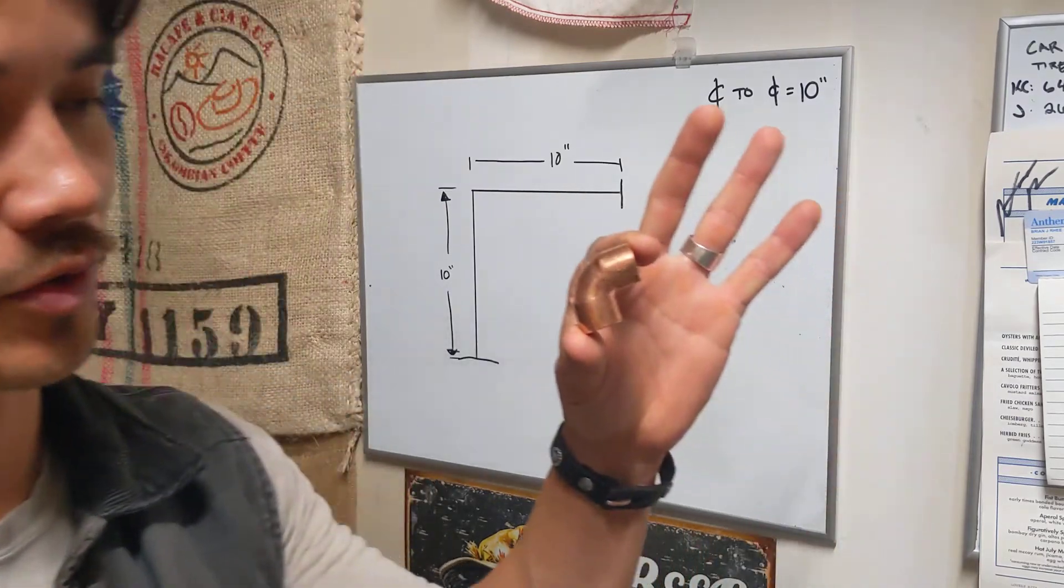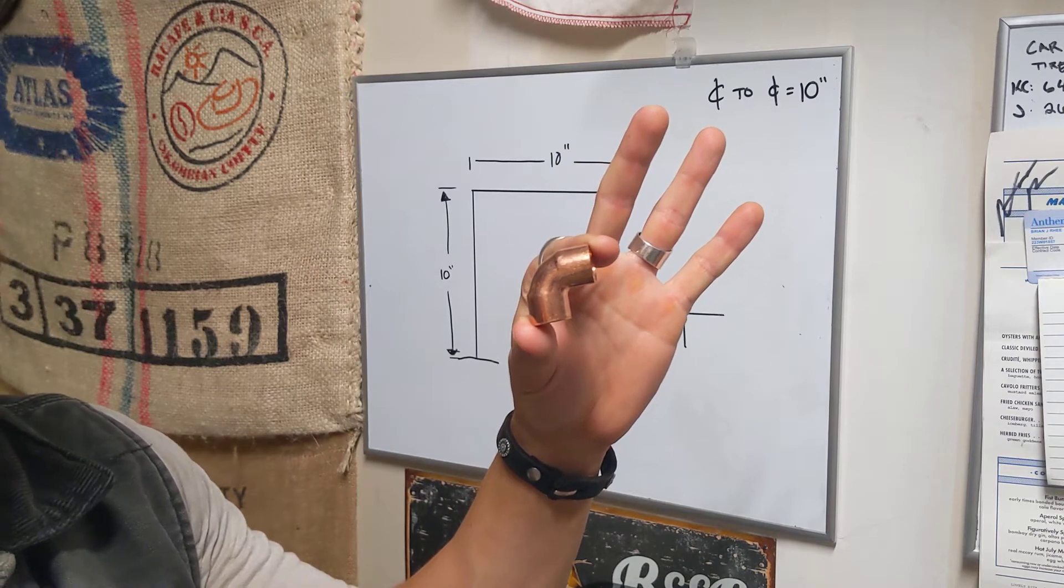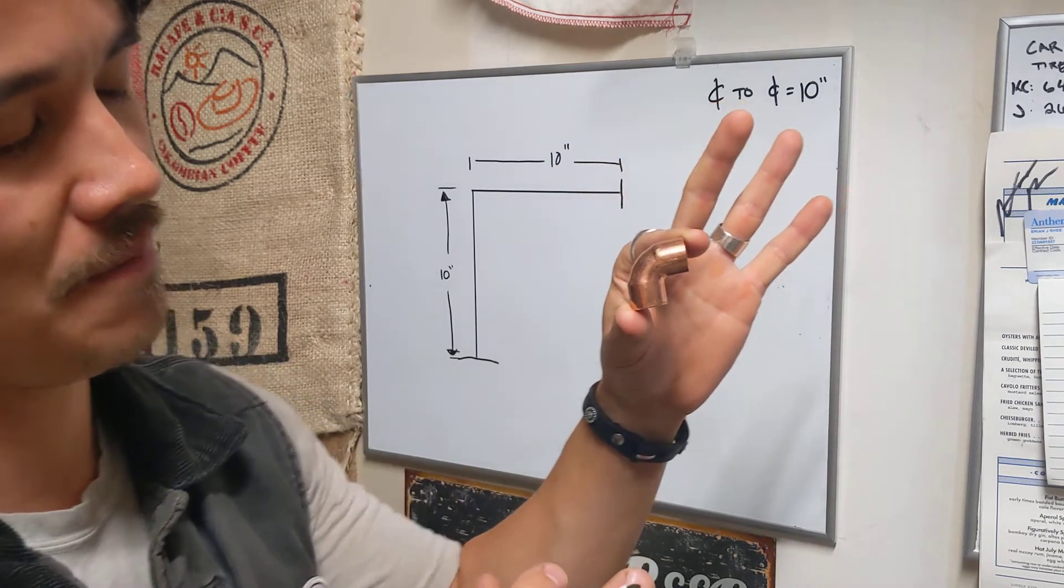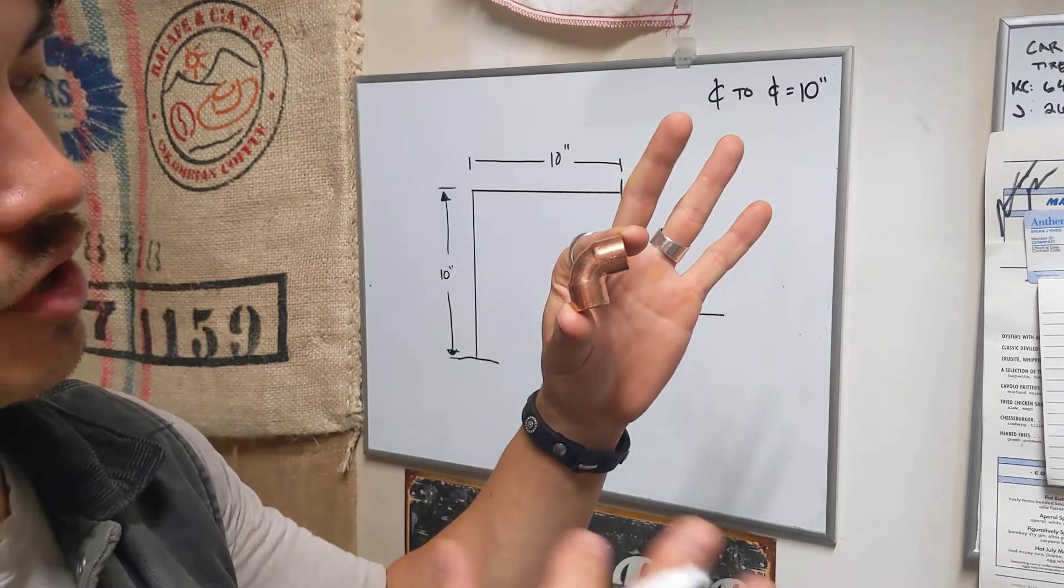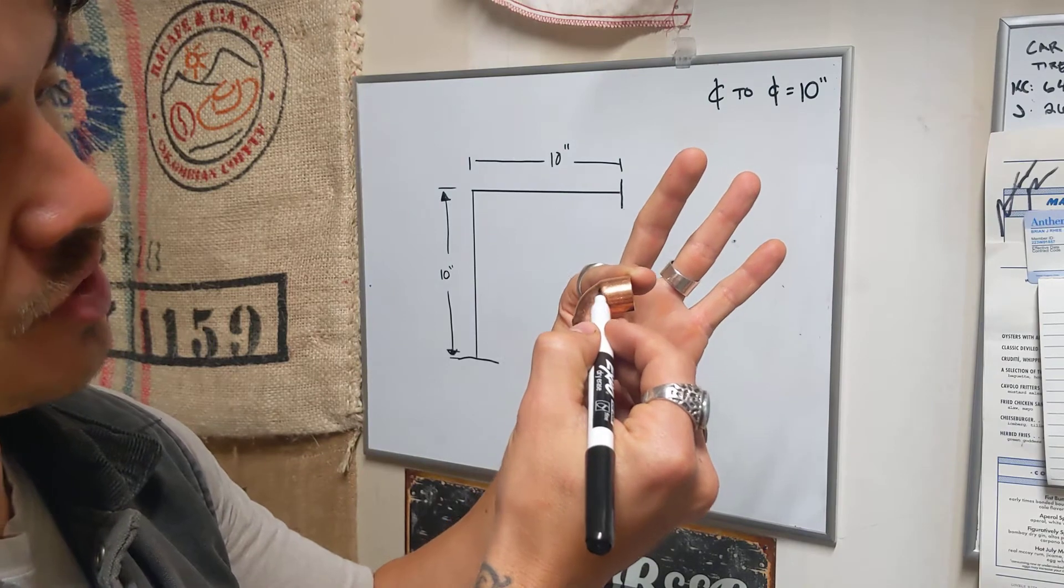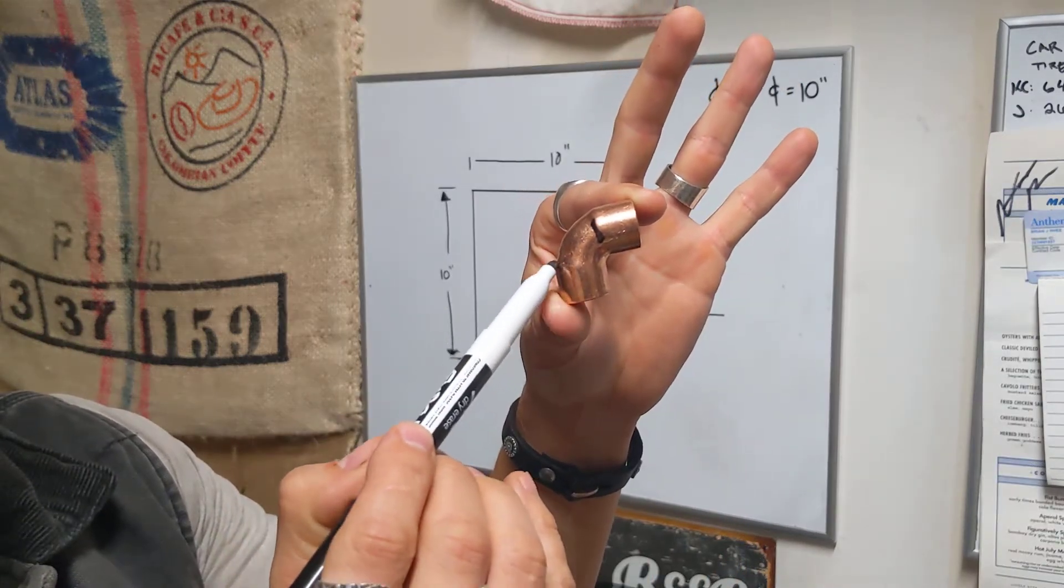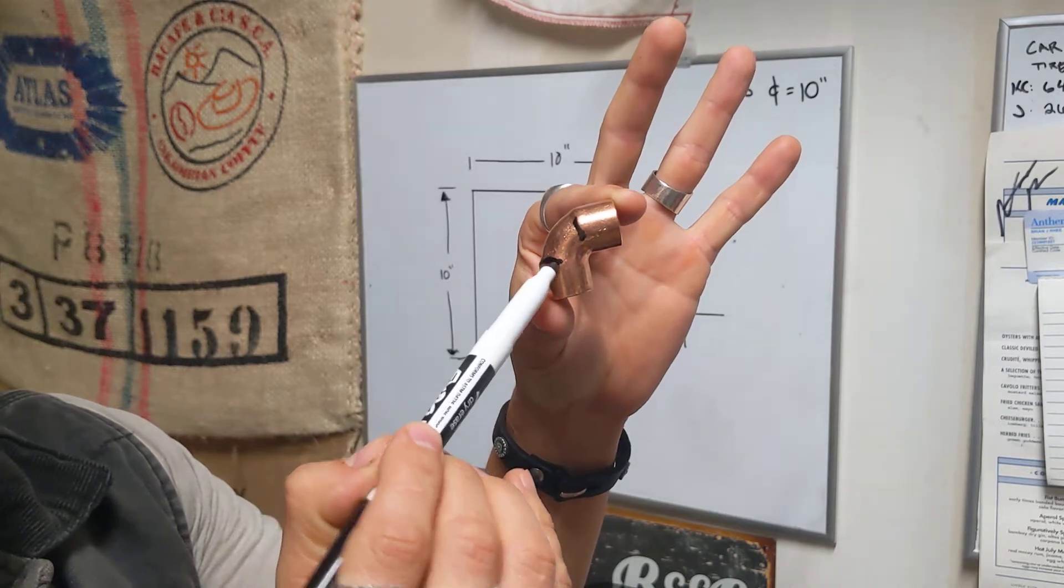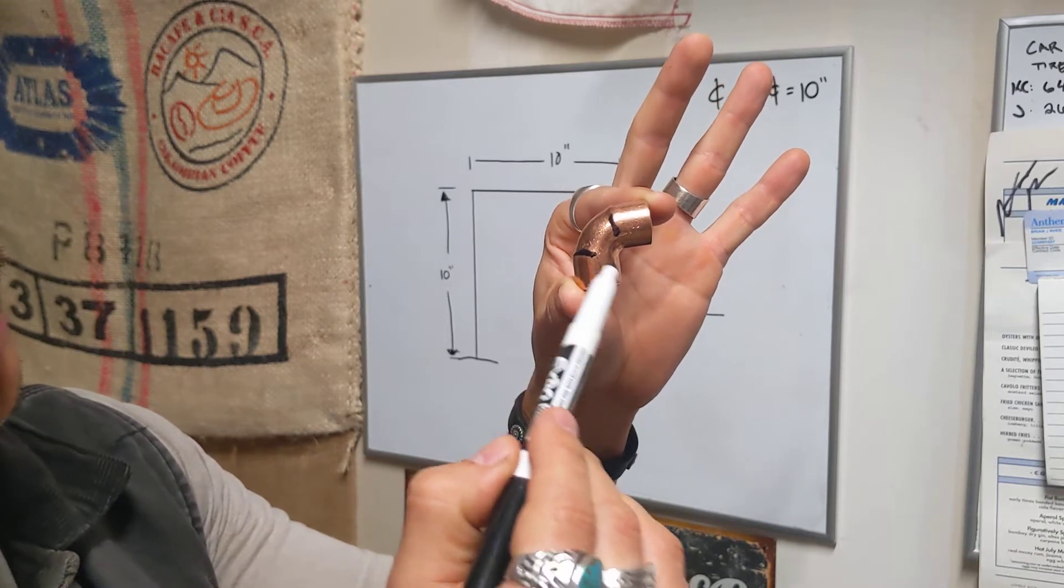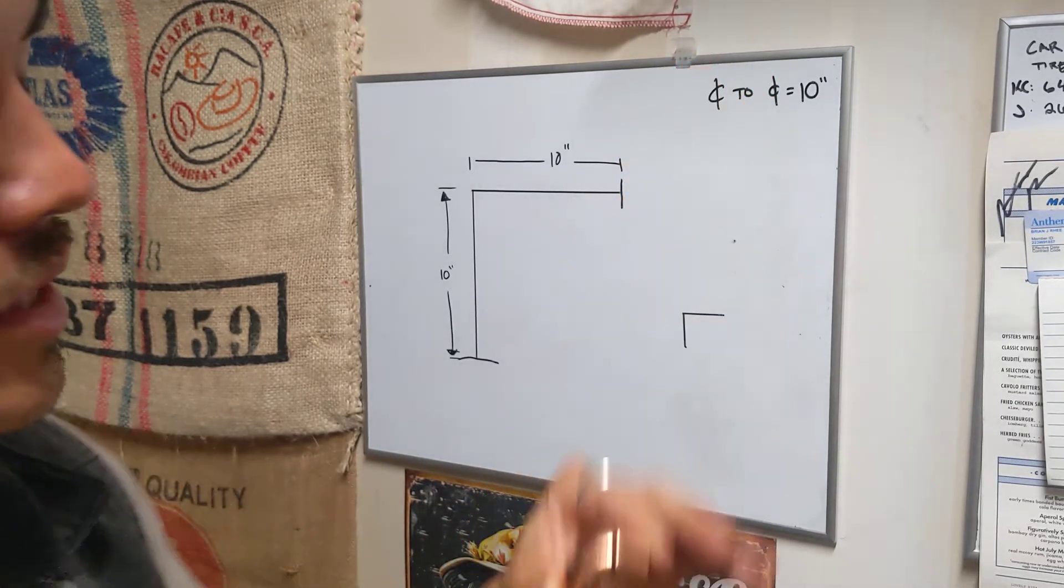As you see we're going to use a 90 degree, this is a half inch solder fitting for copper. The biggest and easiest way to figure out how to configure what takeoff and makeup is - this line right here there's actually a little cup and I'm sure you can see that. This cup is what your pipe actually goes into and this is what we call makeup.